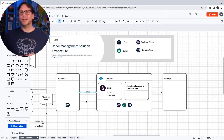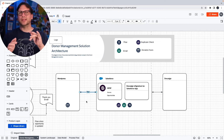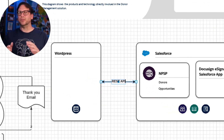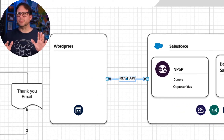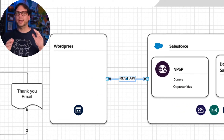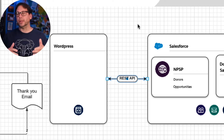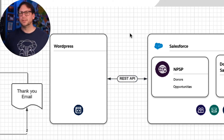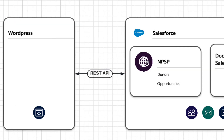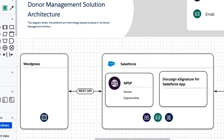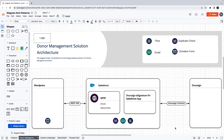Now we'll add our connectors, and since we're starting to get a little bit more granular than we did with our system landscape diagram, we're also going to add some text pills to our connectors so that we can add some additional details. Let's clean everything up and take a look at the finished diagram.